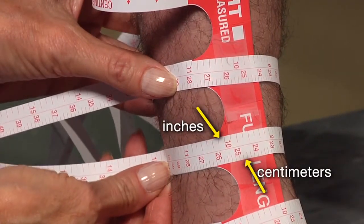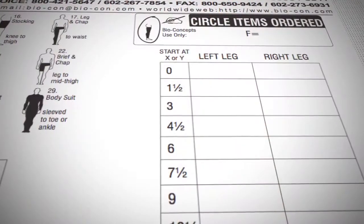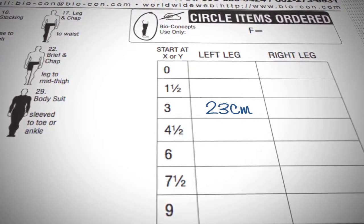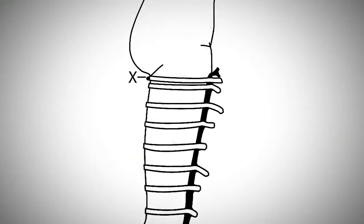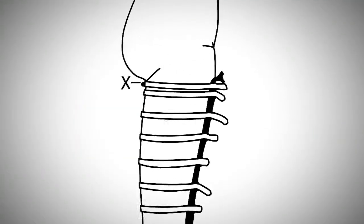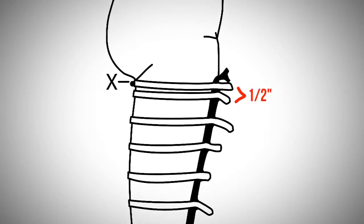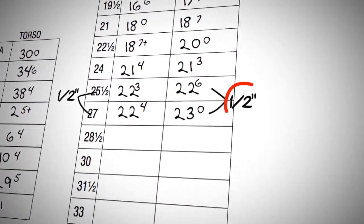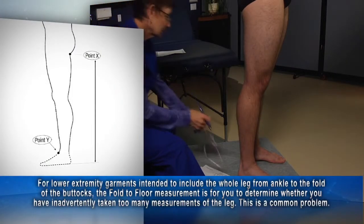Measurements are displayed in inches on the left-hand side of the strap and centimeters on the right. Indicate on the form which measurement system you are using. The top two circumferences may not be one and a half inches apart — in that case, measure the actual distance between the two and record it on the lower extremity chart.